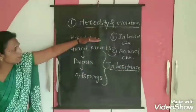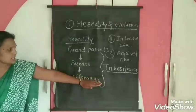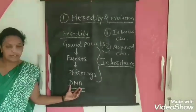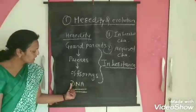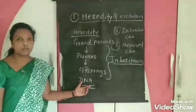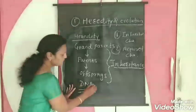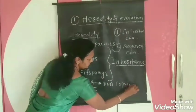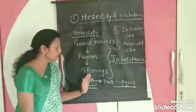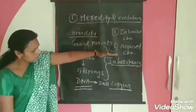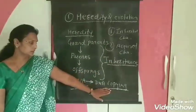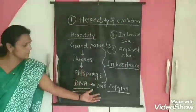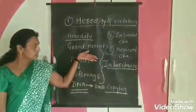This complete process occurs due to changes in DNA. DNA means deoxyribonucleic acid, present in a chromosome. DNA copying occurs during inheritance. During copying, some errors occur — from grandparents to parents, from parents to offspring — some errors occur during generations.